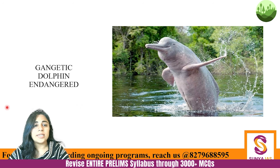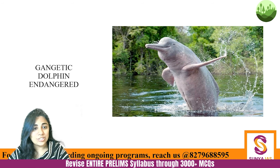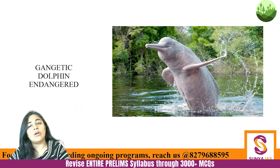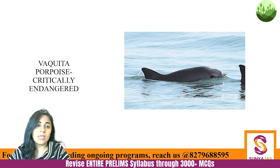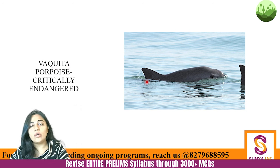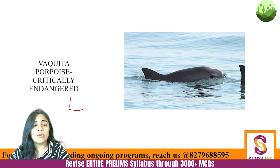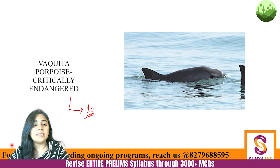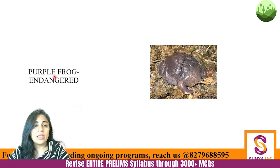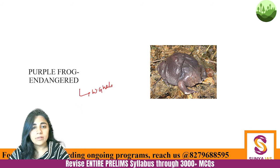The gangetic dolphin is India's national aquatic animal. It is endangered, blind, and can only survive in fresh water. The vaquita porpoise is critically endangered and is not found in India — according to the WWF, only about 10 vaquita porpoise are left in the world, which is why they make news. The purple frog is endangered and found in the Western Ghats.